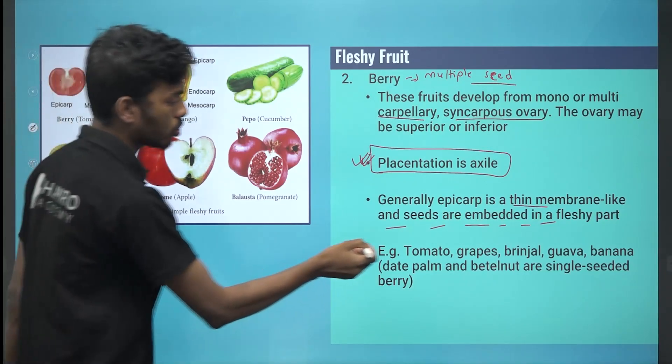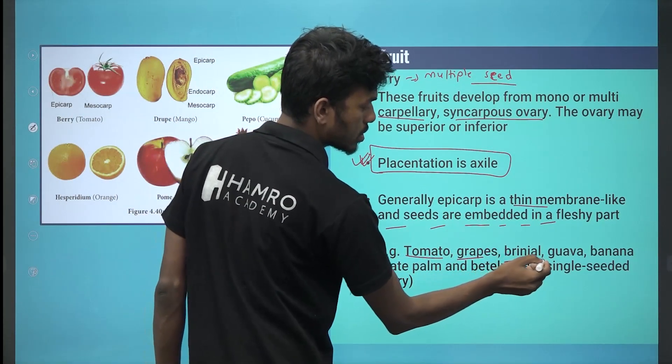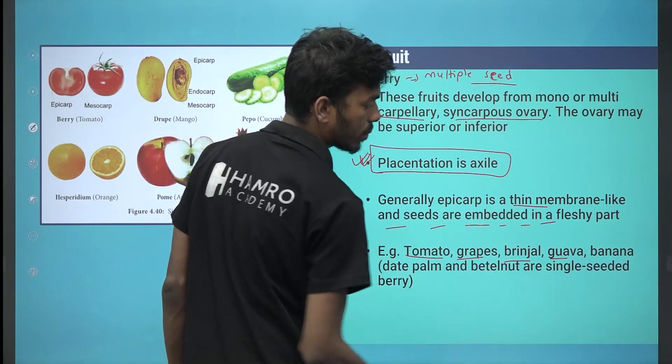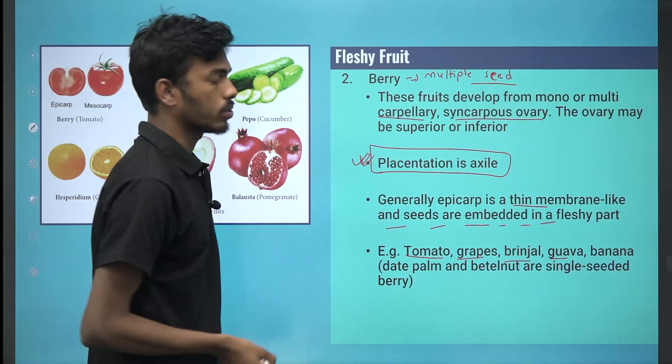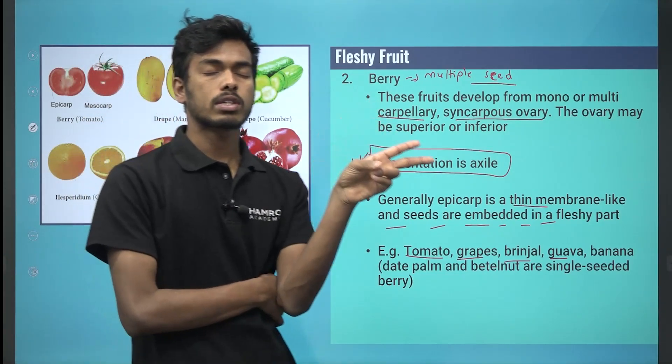Very easy examples: tomatoes, grapes, brinjal, guava. Berry is a fleshy fruit.